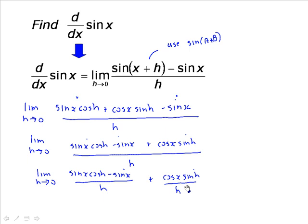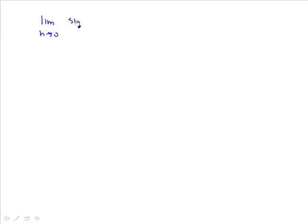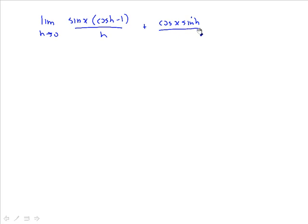We can split this into two limits and factor sine x from the first cluster. So that turns into the limit as h approaches 0 of: sine x times (cos h − 1)/h, plus cos x times sine h / h.